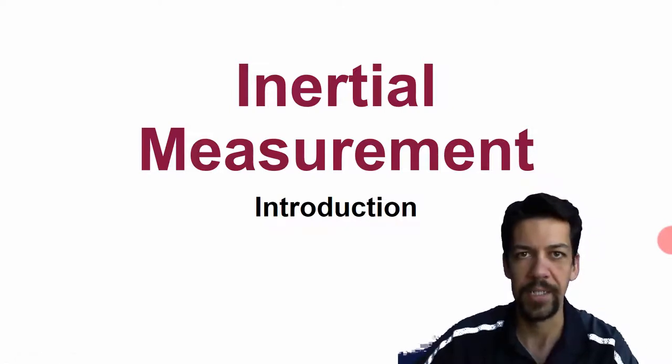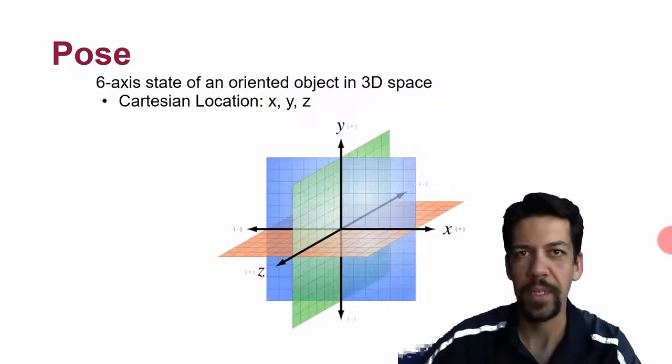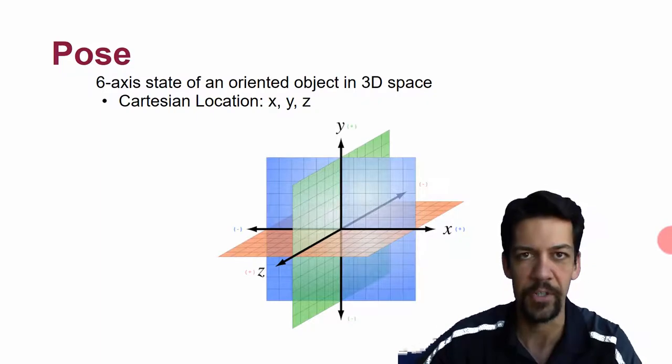The central idea of inertial measurement is to figure out the pose of a system. Pose is the six-dimensional position and orientation of an object in three-dimensional space.